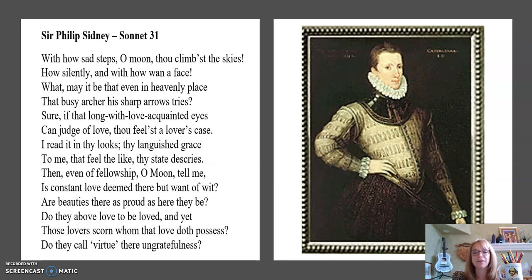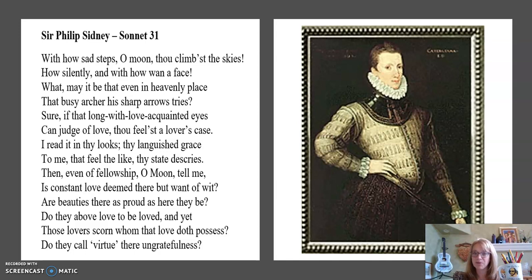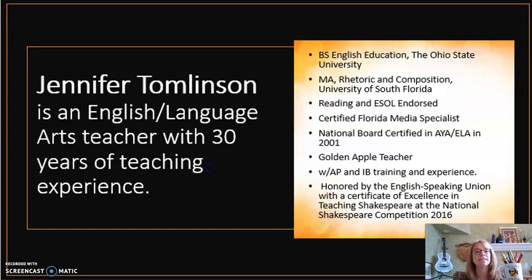I almost forgot — here's Sir Philip Sidney, the guy I mentioned earlier who had been betrothed to Lady Devereaux. This is a poem from that sonnet cycle called Astrophel and Stella, or Stargazer and Star, which kind of shows you that stalker mentality as well. This one is written as a Petrarchan sonnet with the A-B-B-A octave and then the sestet. I cover that poem in another video on my YouTube channel, One Lit Teacher.